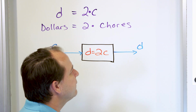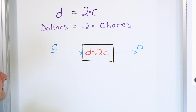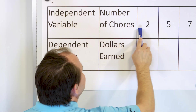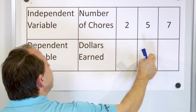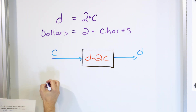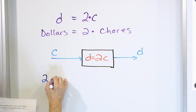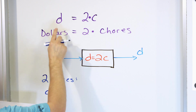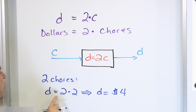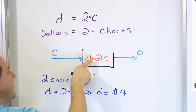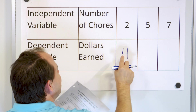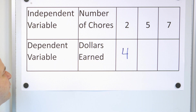Now let's fill out the table. We have two chores, five chores, and seven chores. When chores equals two, D is two times two — D equals four dollars. So when two chores go into the box, four dollars come out. When five chores go in, D is two times five — D equals ten dollars. Five chores go in, ten dollars come out.